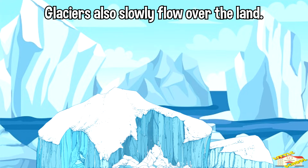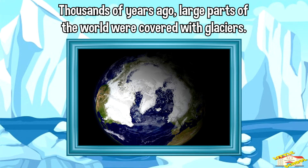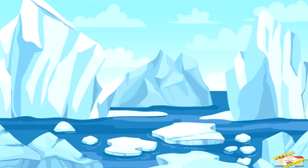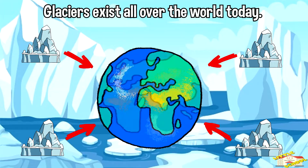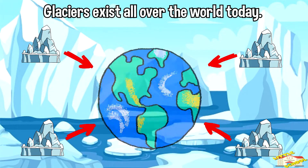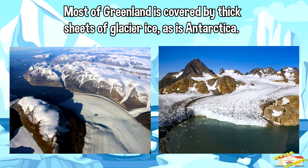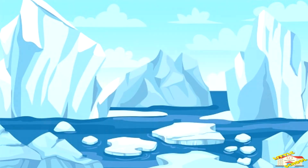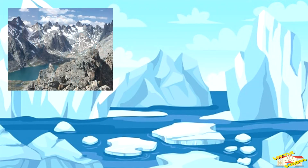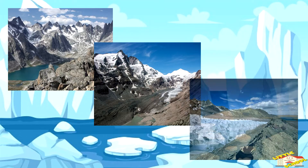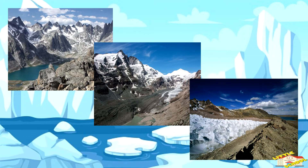Thousands of years ago, large parts of the world were covered with glaciers. Glaciers exist all over the world today. Most of Greenland is covered by thick sheets of glacier ice, as is Antarctica. There are small glaciers in the Rocky Mountains of North America, in the European Alps, and in the Andes of South America.